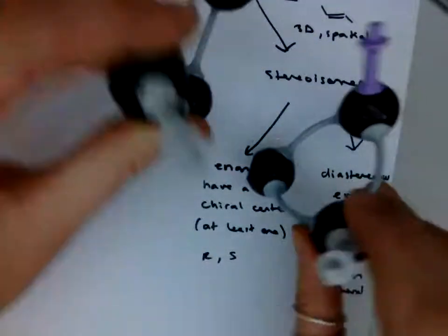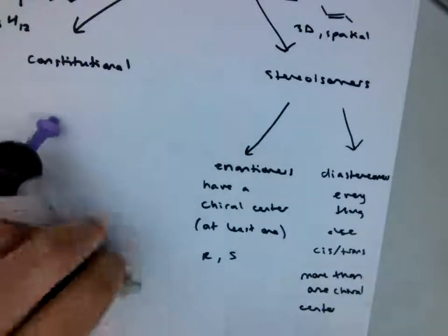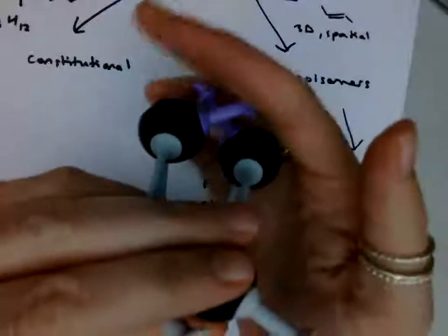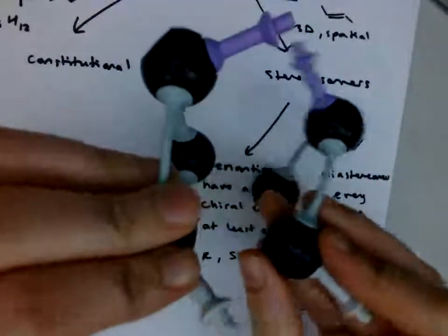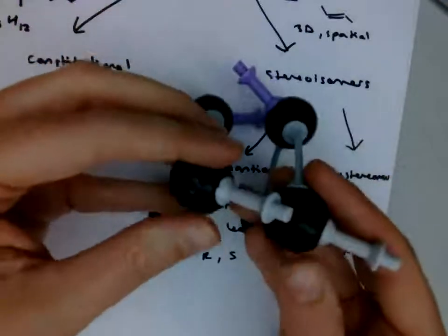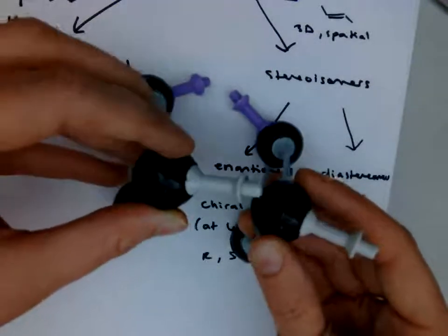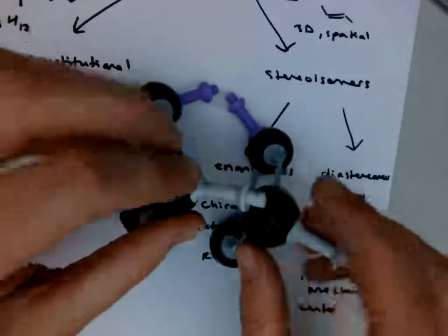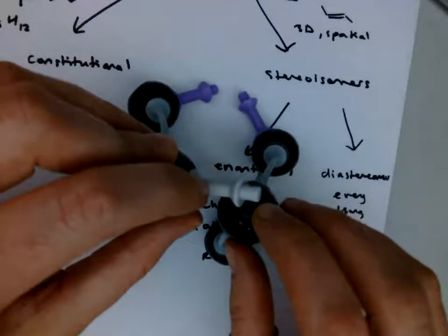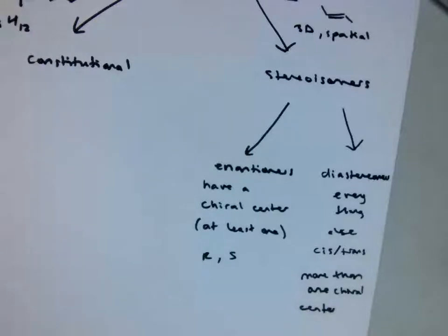Now, this has two chiral centers. If you change one to where these two are superimposable, but these two are not, these carbons are mirror images of each other, the top two. The bottom two are not mirror images of each other. They're the same configuration. So what that means is they're not enantiomers, so they must be diastereomers, because this one down here is different. So that's what I classify as diastereomers, everything else. Cis-trans, more than one chiral center, all those are diastereomers.